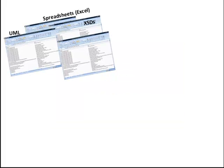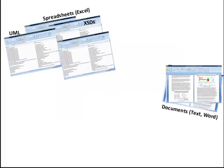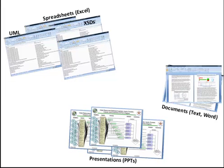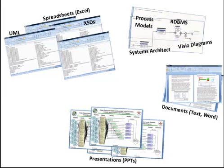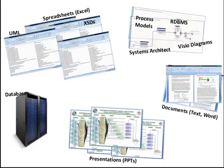Today, people have access to more data in a single day than most people had access to in a lifetime in previous decades. The problem is that data is found in many different forms. All of this information, captured in many different formats, makes it almost impossible to understand existing relationships between different data.